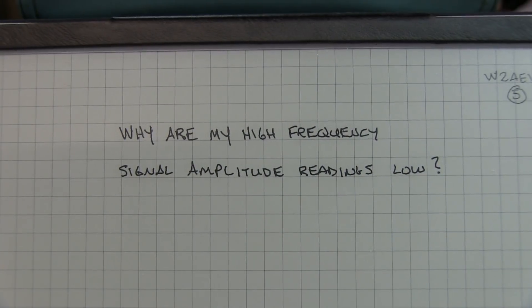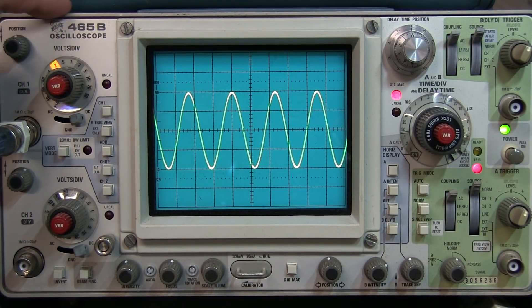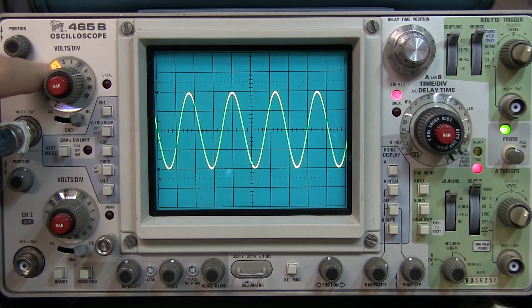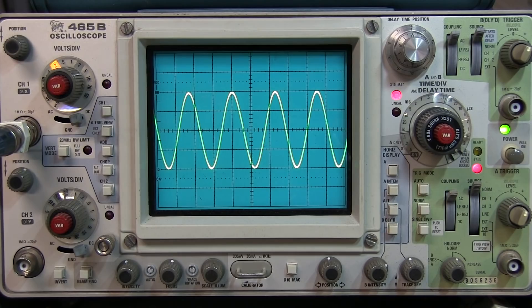Now, why are my high frequency signals reading a little bit low? All right, so here I've got a 90 megahertz signal going into my oscilloscope here. I've got my 50 ohm termination at the input. I'm at 200 millivolts per division, but I'm reading about 800 millivolts peak to peak. And my signal generator is set to 1 volt peak to peak. Why am I not seeing the full amplitude?